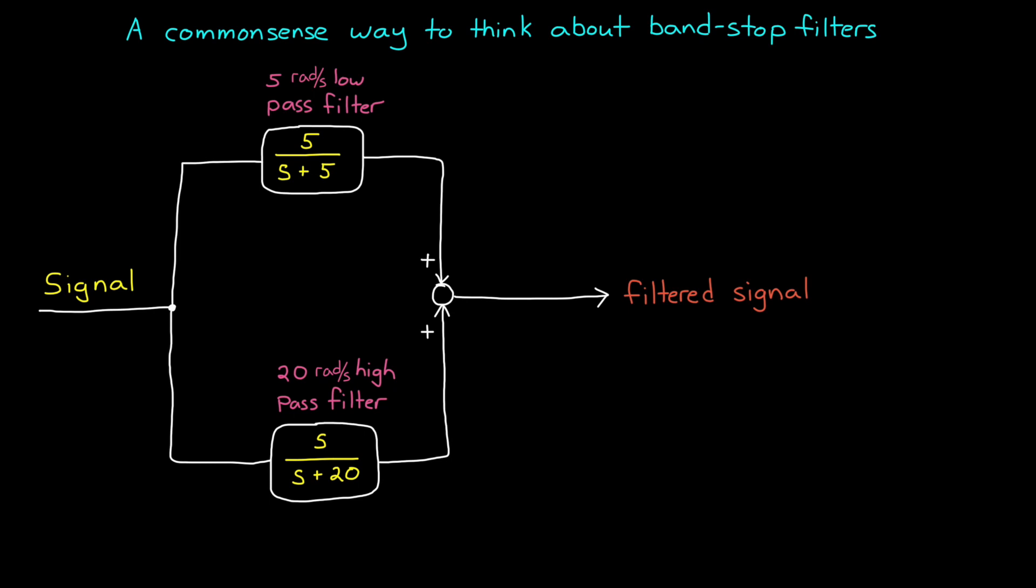In this case, something like 10 radians per second would be too high for the low-pass and too low for the high-pass, and therefore wouldn't make it into the filtered signal.